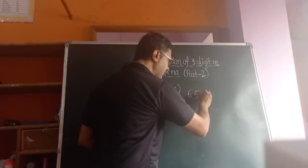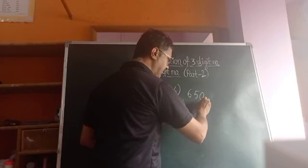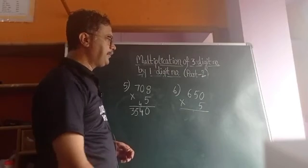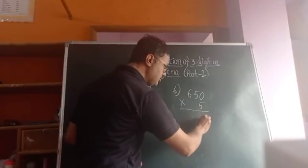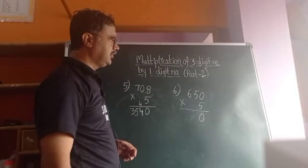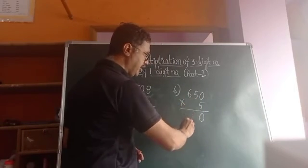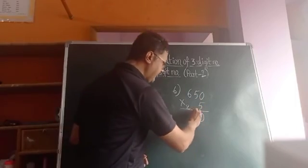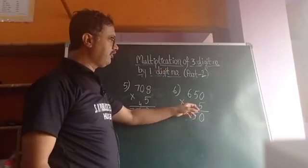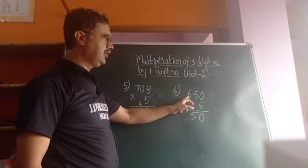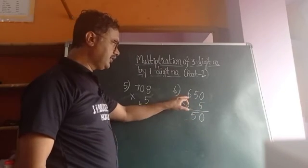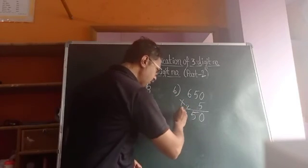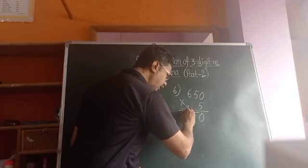Next example: 650 into 5. Starting: 5 into 0 is 0, write 0. Then 5 into 5 is 25, write 5 carry 2. Then 5 into 6 is 30, plus carry 2 is 32, write 32. So the answer is 3250.